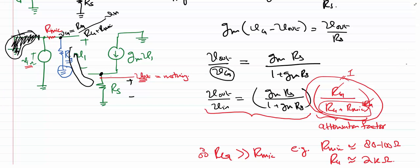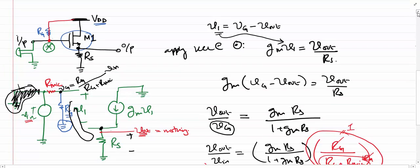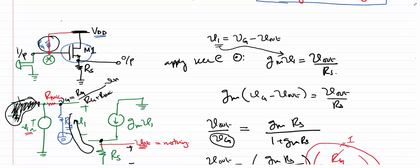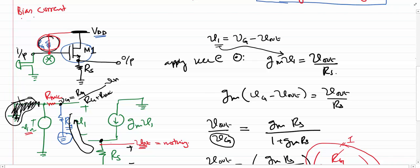Remember that Rg was placed so that the mic does not see an AC ground. Rg must be very high so that the signal from the mic gets into the MOSFET. Now one can ask if this addition of Rg is going to affect the bias current or bias calculations.